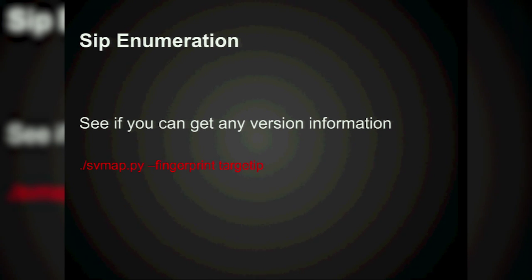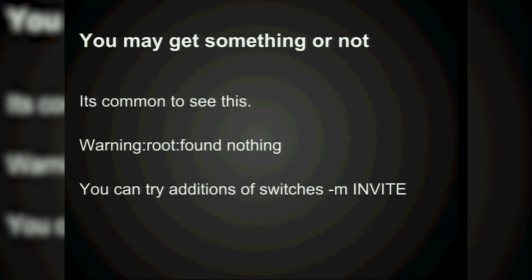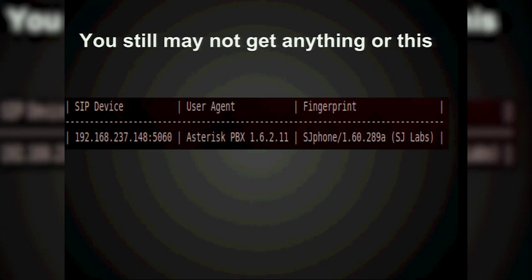SIP enumeration is very similar — you do it with svmap, which is part of sip-vicious. If you run fingerprint against a target IP you'll usually get back the version of Asterisk if they haven't hardened it. You'll sometimes get nothing back, which just means no data. You can try using switches like -m invite and options because not everything blocks invites or options — especially older systems that are still being rolled out.